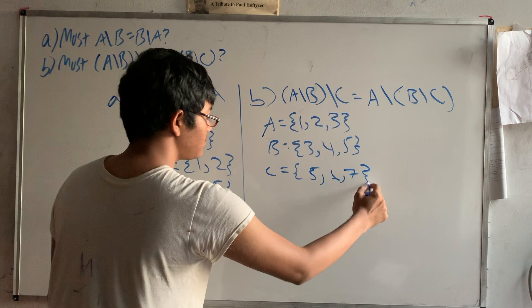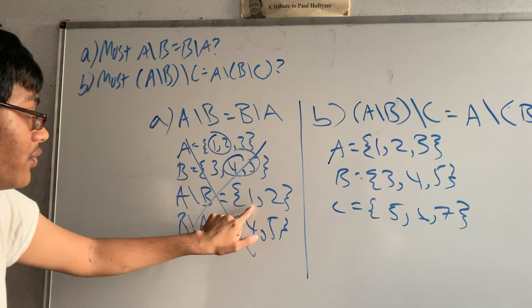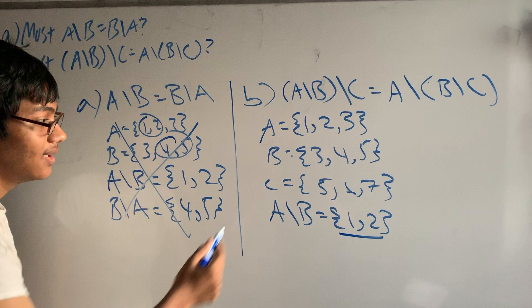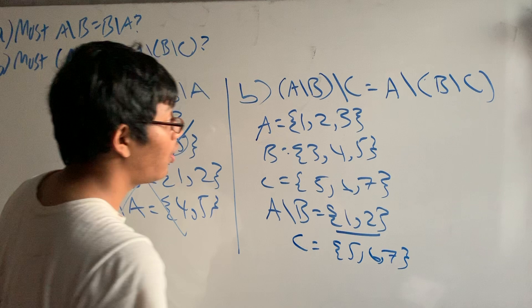And C I'll say {5, 6, 7}. Okay, so the difference of sets A and B, we can just take whatever we got here. So the difference of sets A and B is going to be {1, 2}. And if we take the difference of {1, 2} with set C, let's see what we get. Set C is going to be {5, 6, 7}.